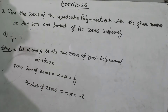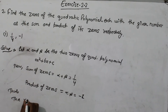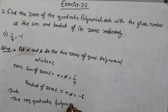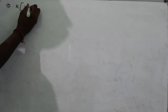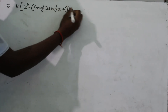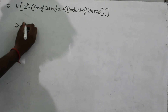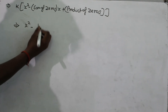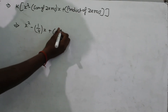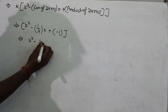Now let's form the quadratic polynomial. The required quadratic polynomial uses this formula: k(x² minus sum of zeros · x plus product of zeros). Substituting: x² minus (1/4)x plus (−1), which gives x² minus (1/4)x minus 1.